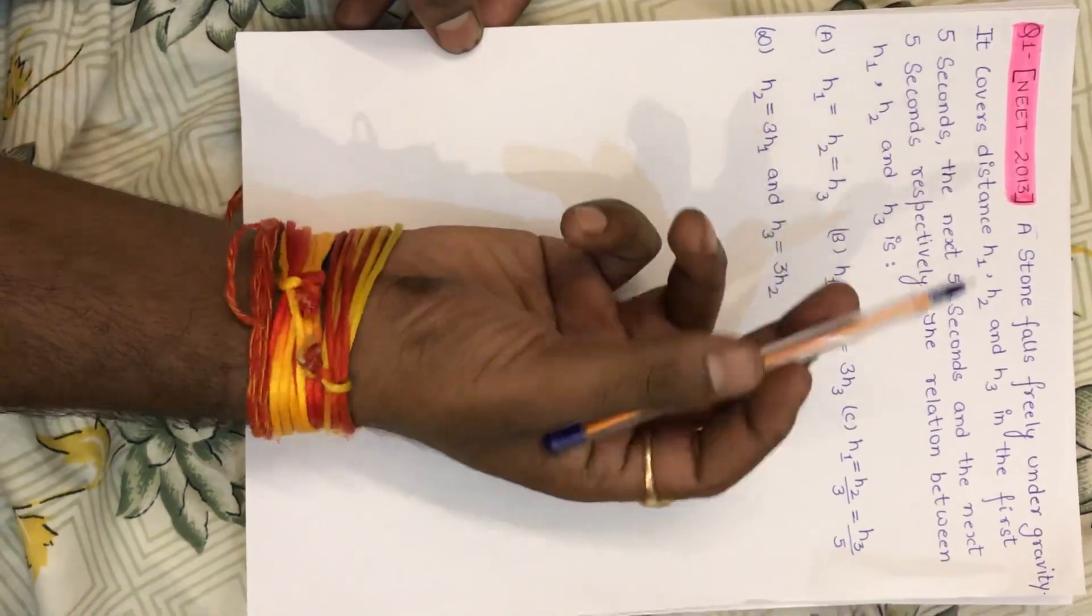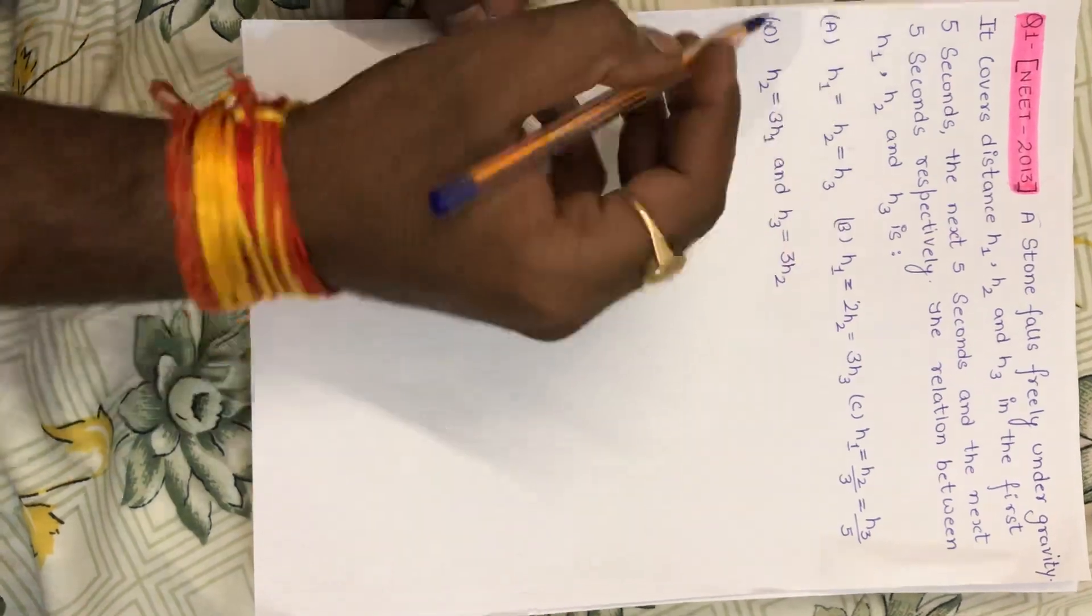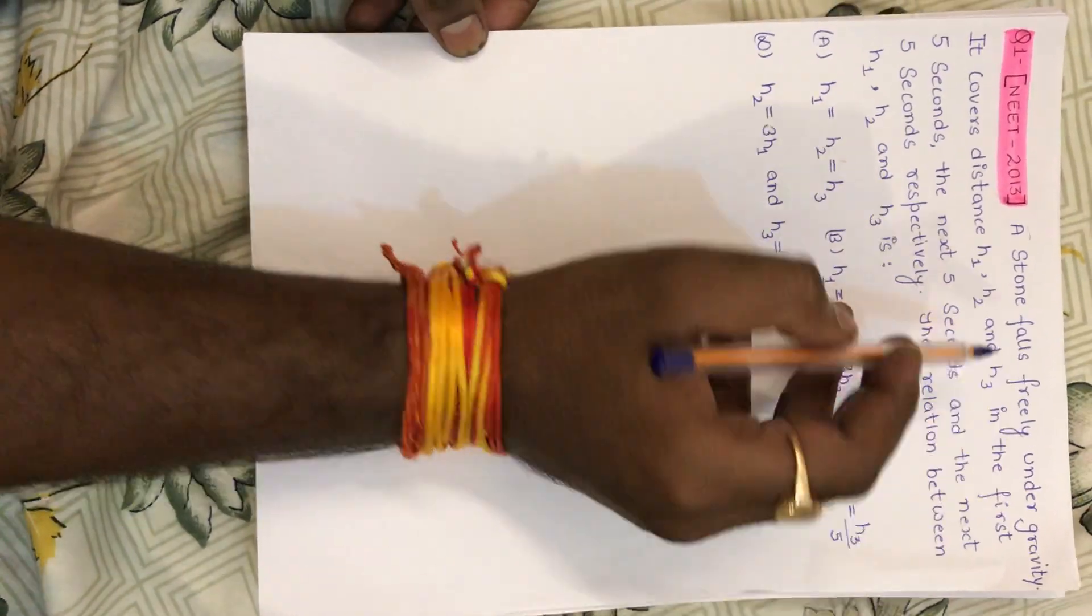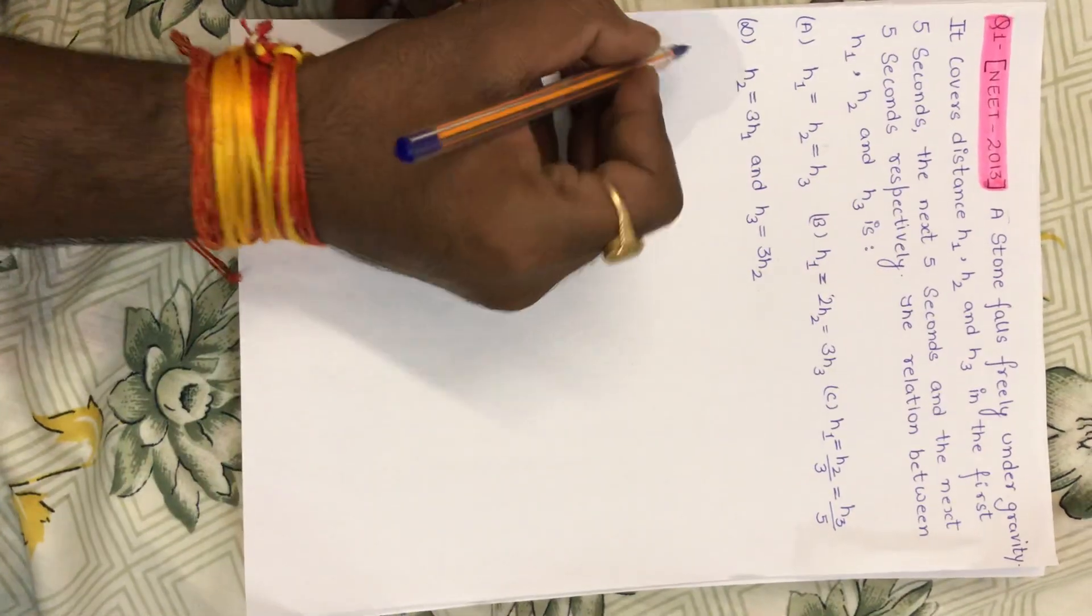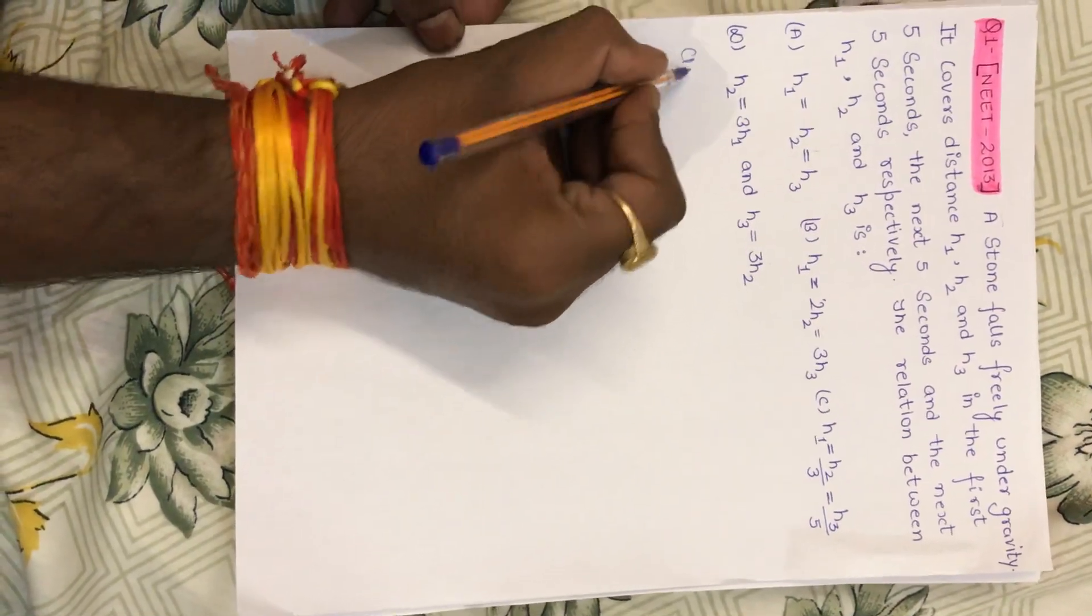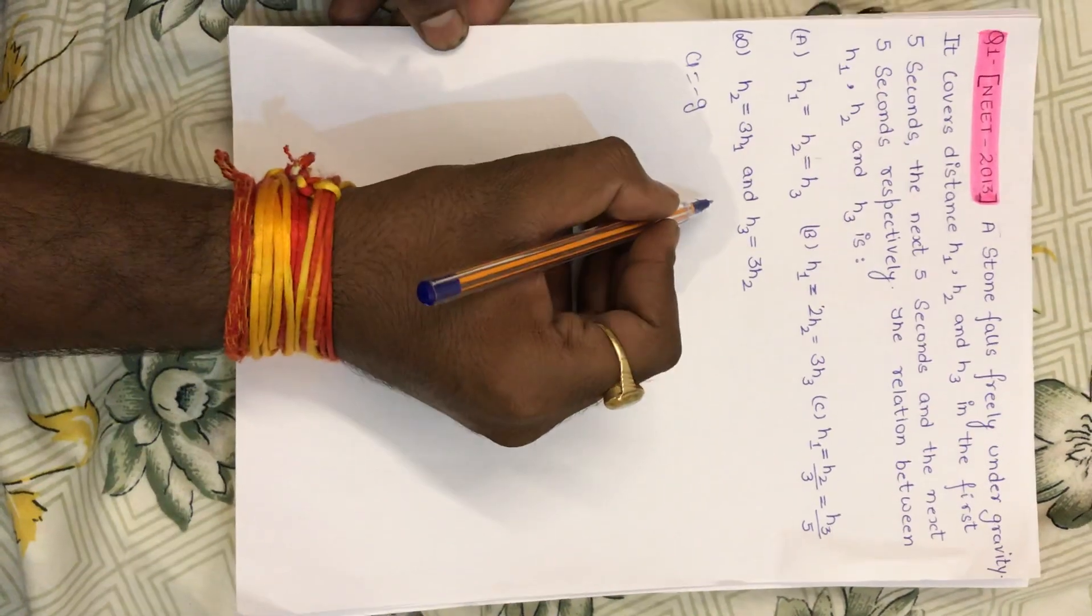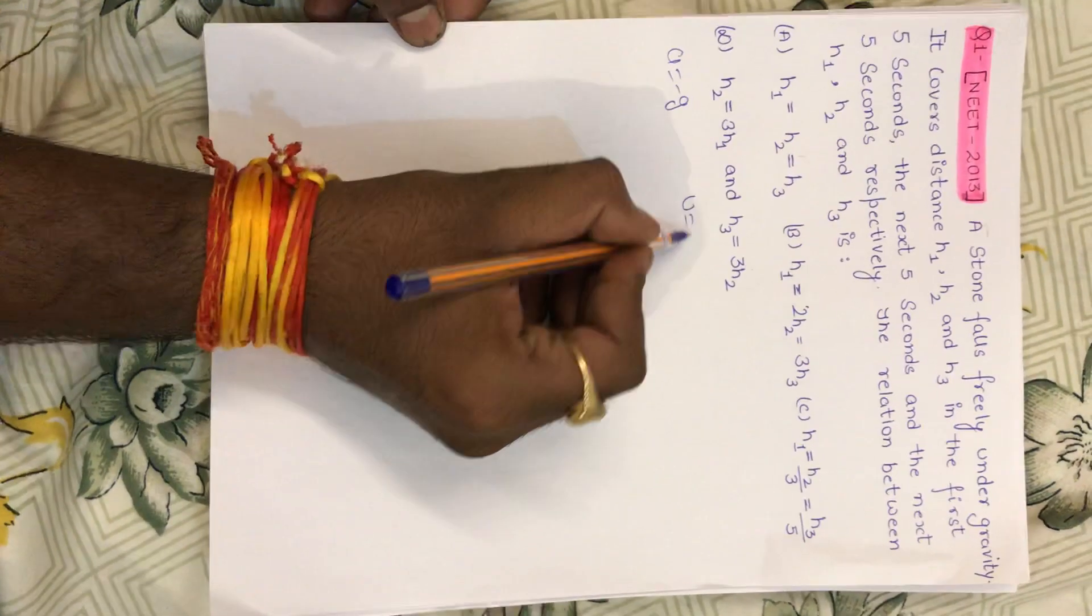Hi guys, we have a question for NEET 2023. A stone falls freely under gravity, which means the acceleration is minus g. In free fall, what will be initially left?